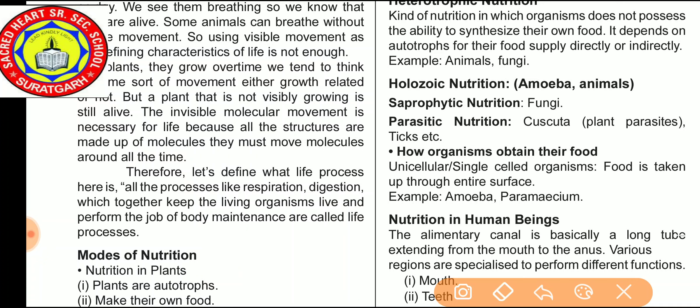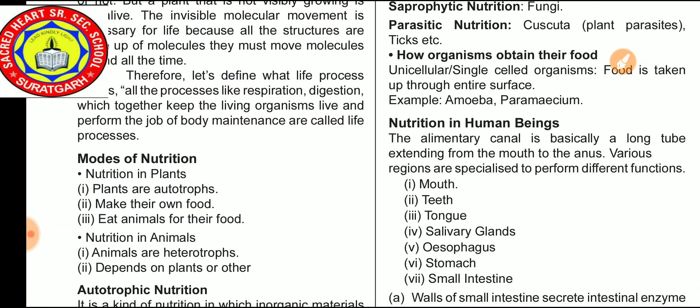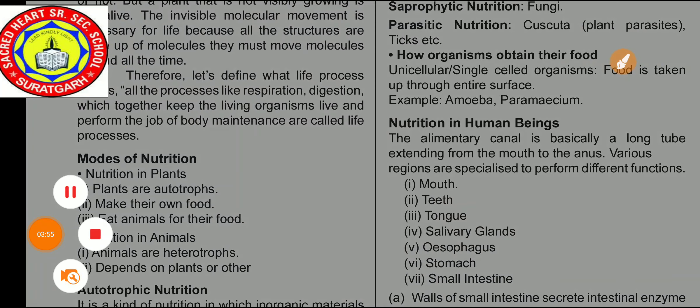Heterotrophic nutrition is further divided into three categories: first is holozoic nutrition, second is saprophytic nutrition, and third is parasitic nutrition. Now we discuss nutrition in plants.